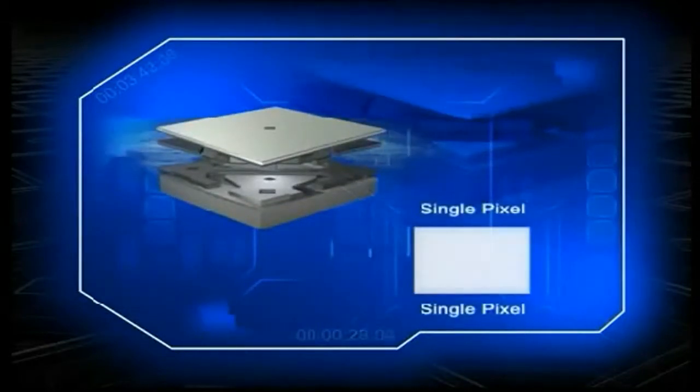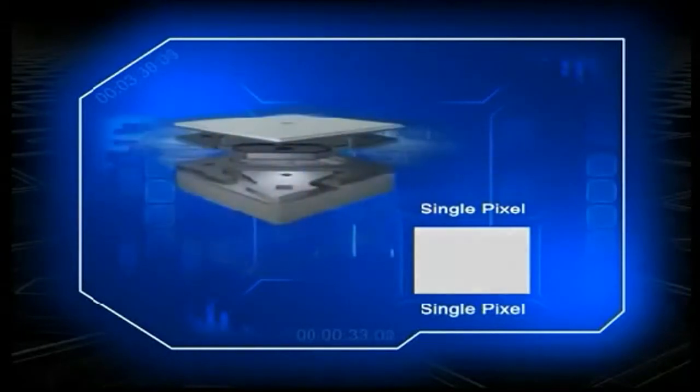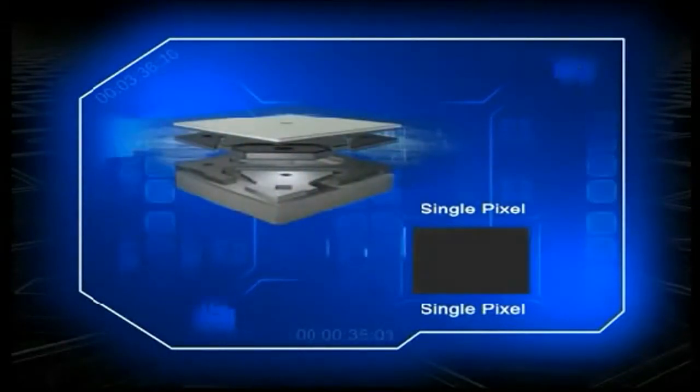When a mirror is tilted toward the light source, it reflects a single white pixel through a projection lens and onto a screen. Tilted away from the light, the mirror is switched off and its corresponding pixel space is dark.